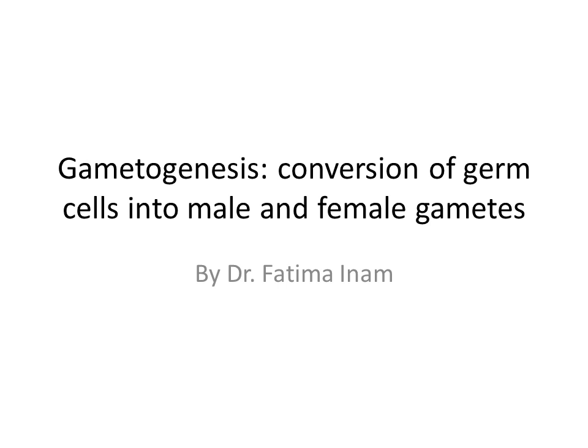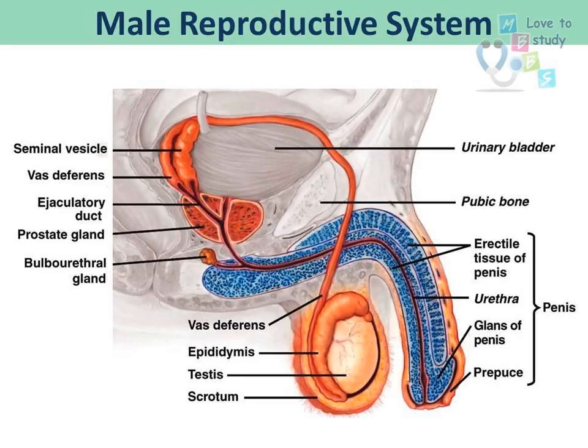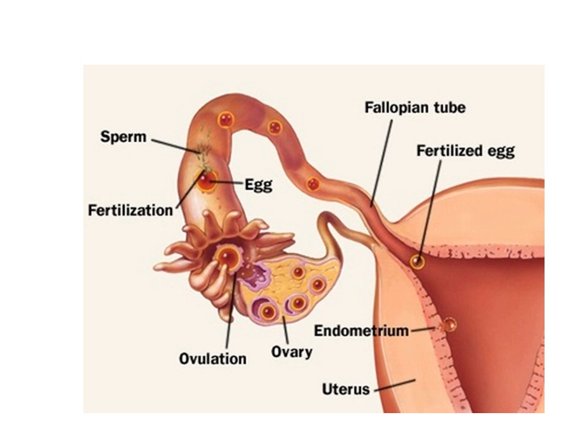So far we have covered the reproductive systems and anatomy of the male and female reproductive systems. The gametes of the male reproductive system are known as sperms and they are produced in the testes. From here they enter into the system of ducts — the epididymis, vas deferens, ejaculatory duct, and then the urethra — and come out from the urethra to be deposited into the vagina of the female.